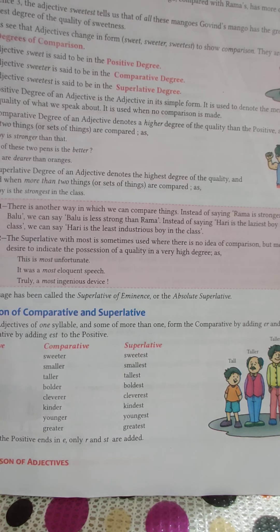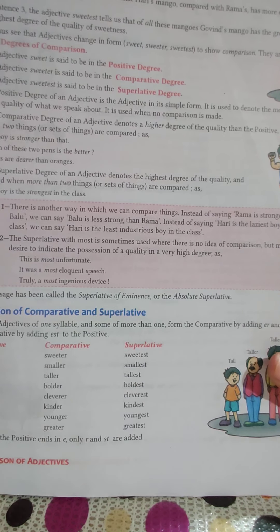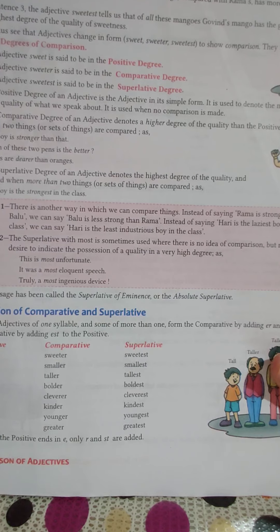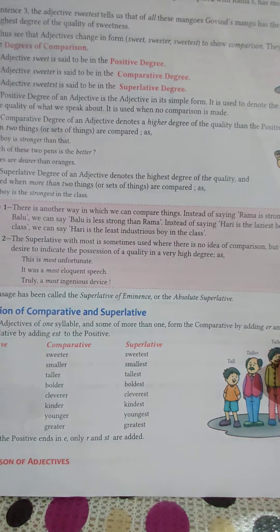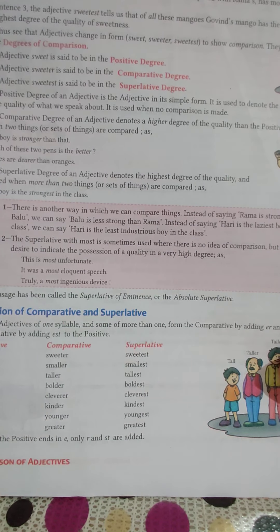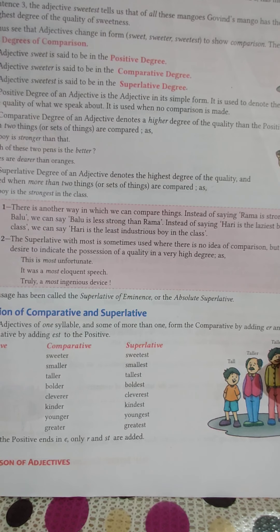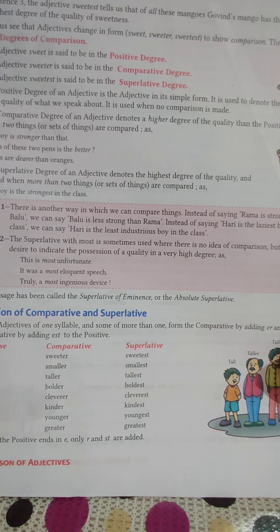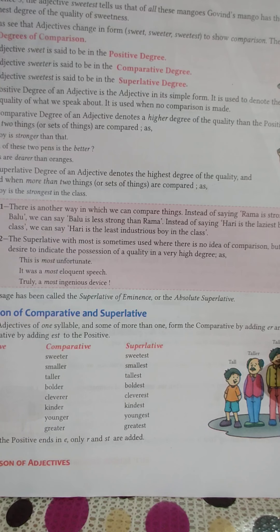It denotes a higher degree of quality than the positive. For example: 'Which of these two pens is the better?' — one pen is better than the other. 'Apples are dearer than oranges.' I like the apple more than the orange. Then we move to the superlative degree.